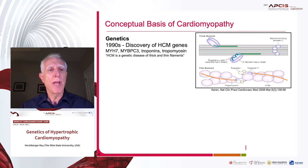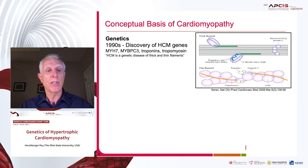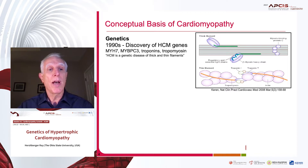The conceptual basis for hypertrophic cardiomyopathy started in the 1990s with the discovery of HCM genes. First was MYH7 beta-myosin heavy chain, and then MYBPC3 or myosin binding protein C3, then the troponins and tropomyosin. This picture shows both thick and thin filaments, and HCM is really a genetic disease of both thick and thin filaments as shown here.